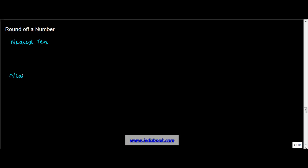In this lecture we are going to learn about how to round off a number. Rounding off can happen to the nearest 10, the nearest hundred, or nearest thousand. I'll take two or three examples of each one of them in this particular example.